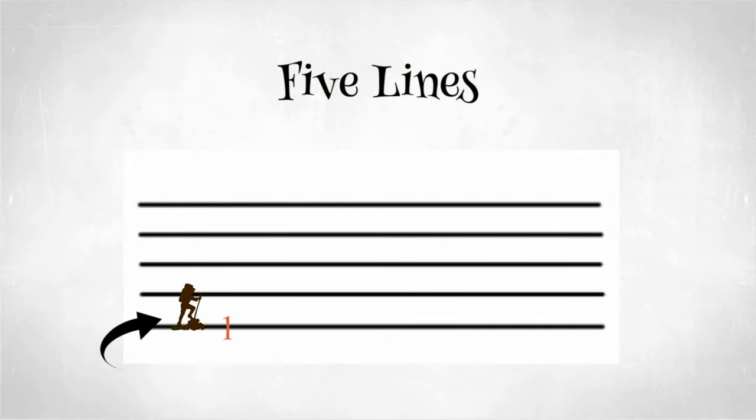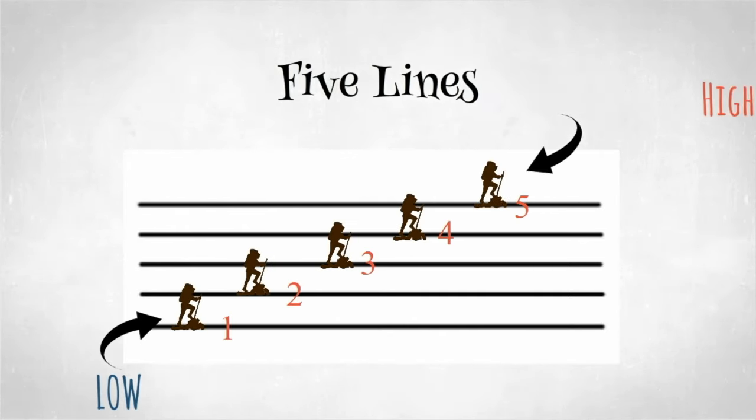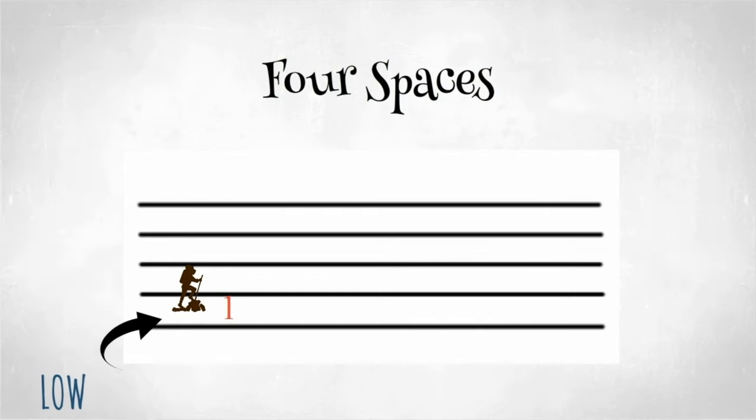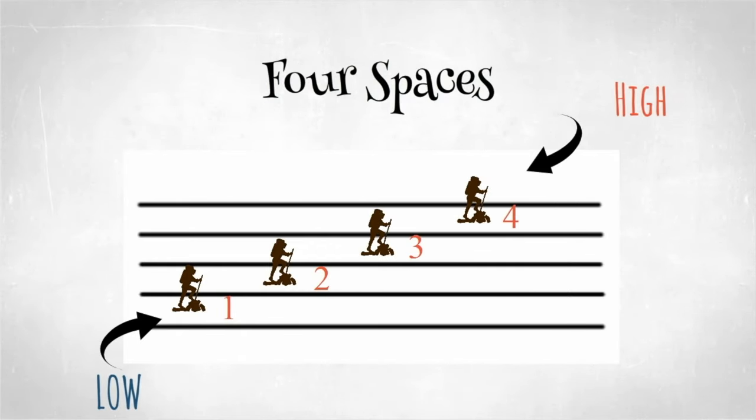The staff has five lines. The first line starts at the bottom or low part of the staff and works its way up: one, two, three, four, and five. The staff also makes up four spaces, starting with space one on the bottom and slowly working its way up.